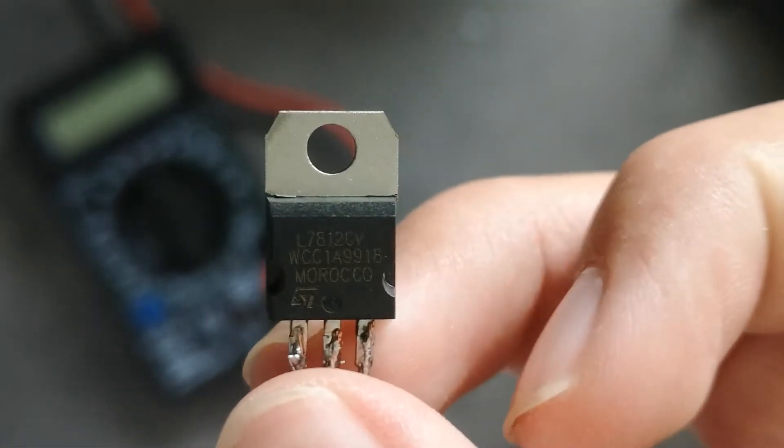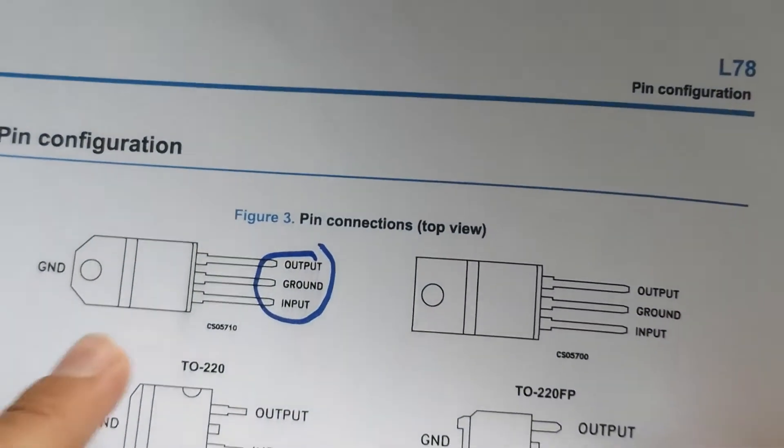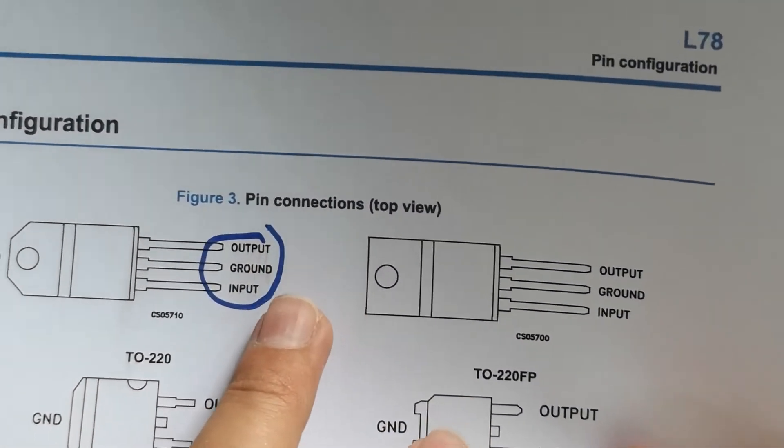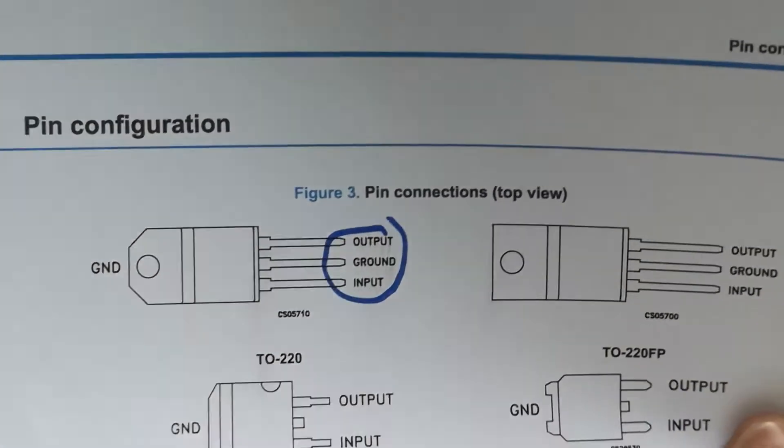It's a simple 12 volt voltage regulator and, as you can see in the wonderful data sheet I printed out here, it has three pins: output, ground and input, and the big metal on the top is also connected to ground.